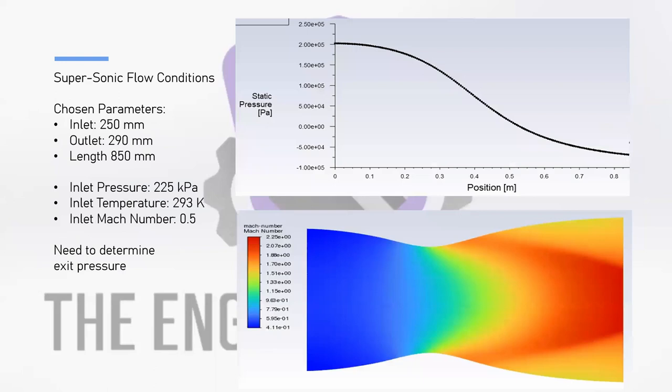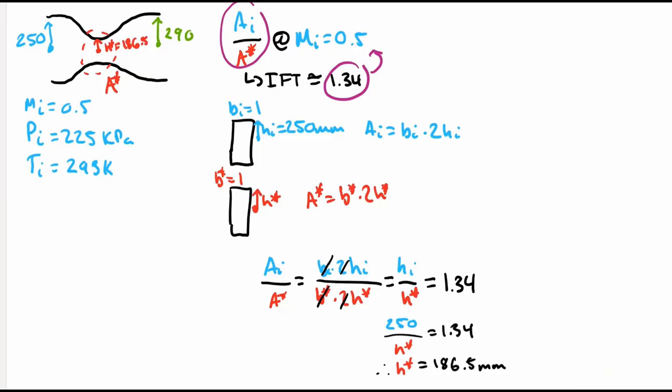These are the parameters that I have chosen in order to build my nozzle, and based on these parameters we're going to look at how to find the exit pressure in order to give us supersonic flow at the exit of our nozzle. The calculations to get the supersonic flow are very similar to the ones we saw for the subsonic flow in part 1, so we're going to adjust them to get an exit pressure that will give us supersonic flow instead of subsonic.